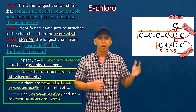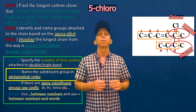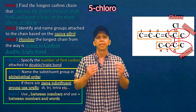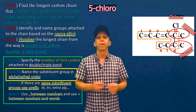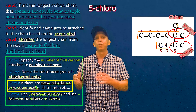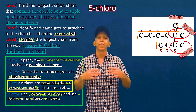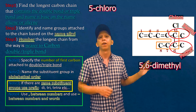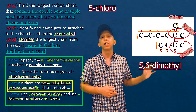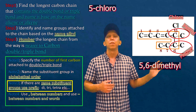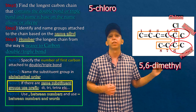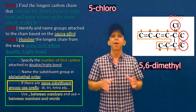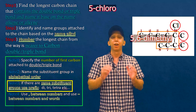After chloro, we have two methyls: one attached to carbon number five and the other attached to carbon number six. When we have more than one of the same substituent group, we put 'di' for two, 'tri' for three, and so on. So we write 5,6-dimethyl, because one methyl is attached to carbon five and the other to carbon six.